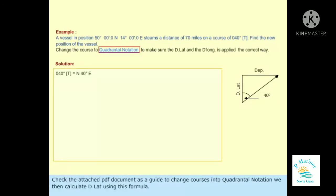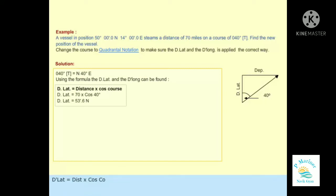Check the attached PDF document as a guide to change courses into Quadrantal Notation. We then calculate DLat using this formula: DLat equals distance times cosine co. Substitute distance and course in the formula to get DLat.